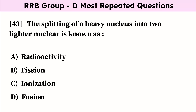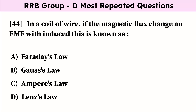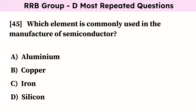The splitting of a heavy nucleus into two lighter nuclei is known as? Correct answer is fission. In a coil of wire, if the magnetic flux changes, an EMF is induced — this is known as? Correct answer is Faraday's law. Which element is commonly used in the manufacture of semiconductors? Correct answer is silicon.